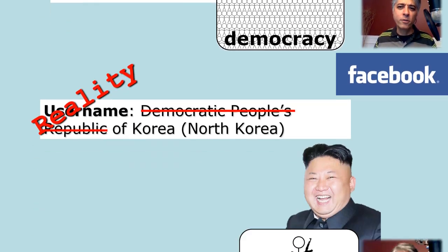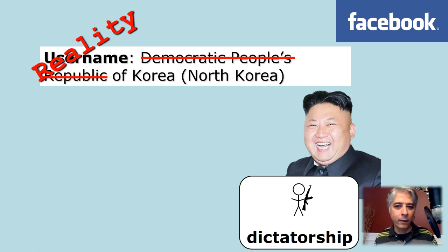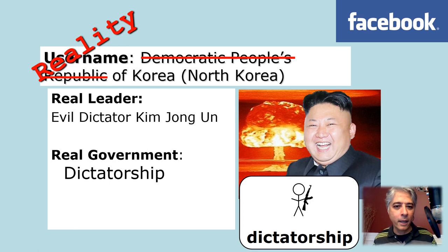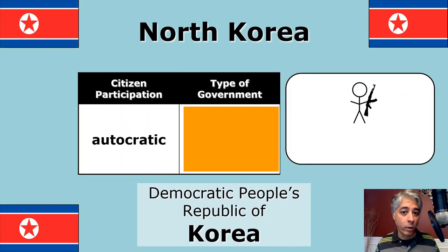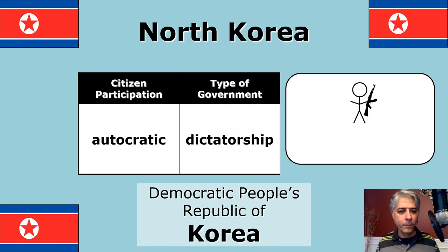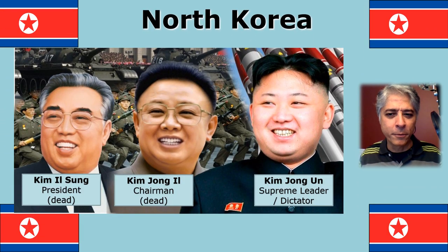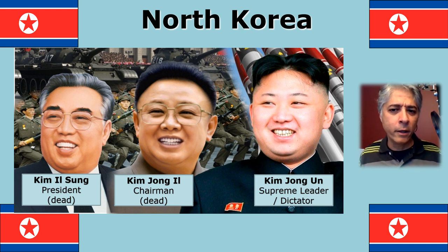The real information: if we look at the reality for North Korea, obviously we are not looking at a happy democracy but a dictatorship. The real leader is evil dictator Kim Jong-un. Citizen participation is autocratic, and their type of government is a dictatorship. Technically, North Korea has three leaders: the president is Kim Il-sung, the chairman is Kim Jong-il, and the dictator or supreme leader is Kim Jong-un.